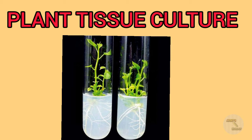The underlying principles involved in plant tissue culture are very simple. Firstly, a plant part — an organ or tissue — is isolated from the intact plant. Secondly, it is necessary to provide the plant part with an appropriate environment in which it can express its intrinsic or induced potential, meaning a suitable culture medium and proper culture conditions must be provided. Finally, these procedures must be carried out aseptically.